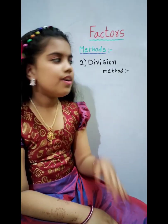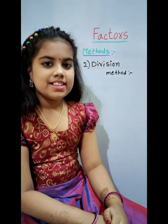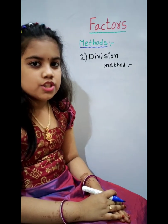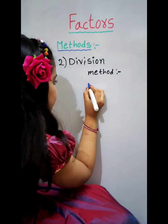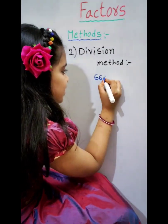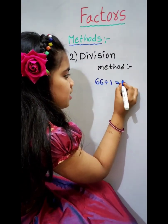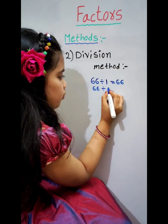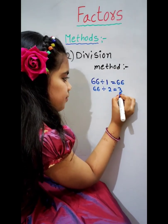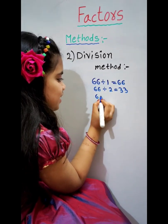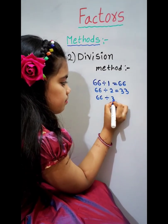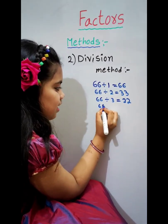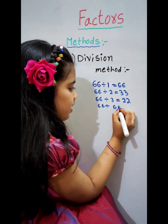The second one is the division method. A factor is a number which exactly divides the given number. For example, factors of 66. 66 divided by 1 equals 66. 66 divided by 2 equals 33. 66 divided by 3 equals 22. 66 divided by 6 equals 11.